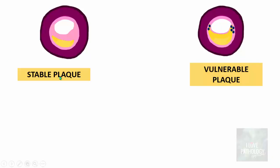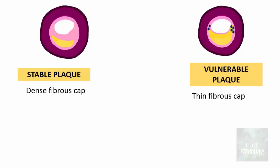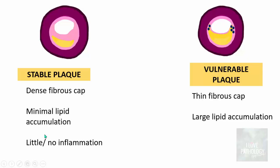Let us understand stable versus vulnerable plaques. A stable plaque has a dense fibrous cap, minimal lipid accumulation, and very little or no inflammation. In contrast, an unstable or vulnerable plaque has a very thin fibrous cap — making it more prone to rupture or ulceration — large lipid accumulation, and dense inflammation. Inflammation causes decreased synthesis and increased degradation of extracellular matrix collagen, resulting in thinning of the fibrous cap and making it more prone to rupture.